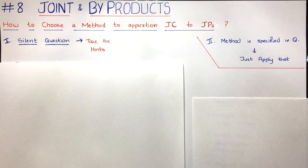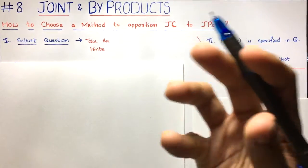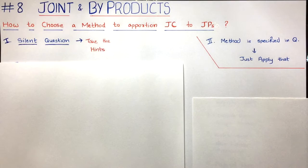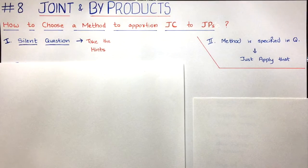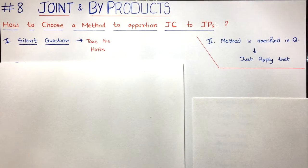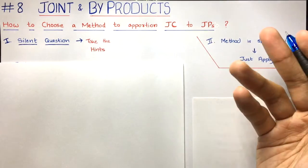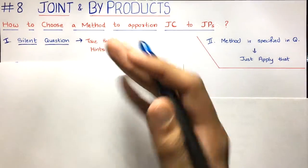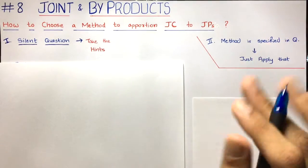Hi everyone, welcome back to Sahab Academy. Today in this eighth video of the Joint Products and By-Products chapter, we are going to understand how to choose a method to apportion the joint cost to the joint products. In the previous seven videos of this chapter, we discussed the concept overview and then covered each of the methods of apportioning joint cost to joint products and solved problems with each.